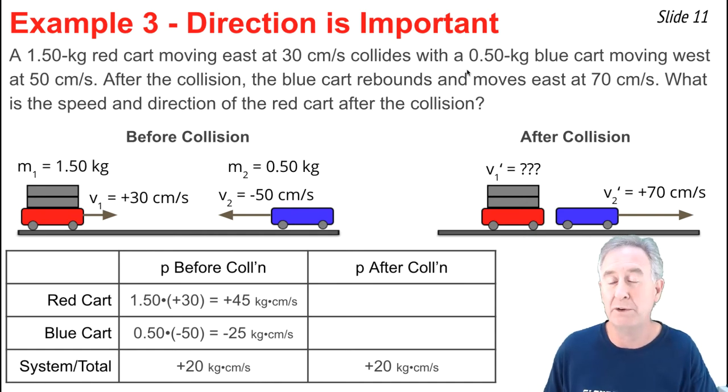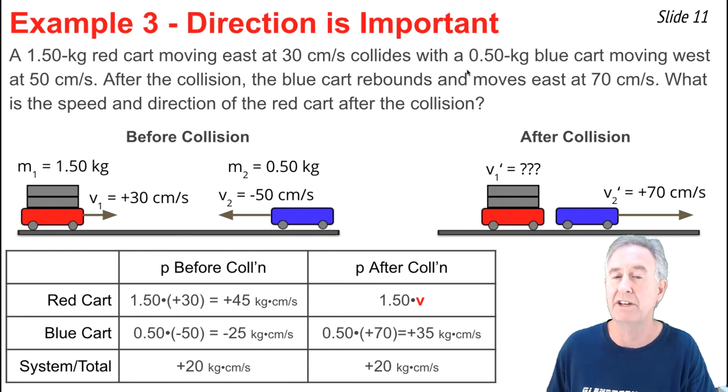For the red cart, I don't know its velocity, so for its momentum I'm going to go mass times velocity. That's 1.5 times v. I'm looking to solve for v. And for the blue cart, I go mass of 0.5 times velocity of positive 70. That's 35 units of momentum for the blue cart.